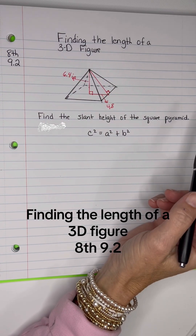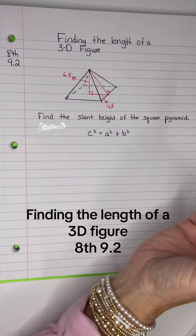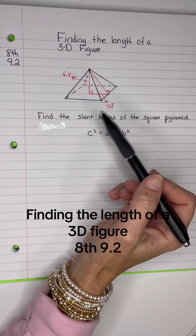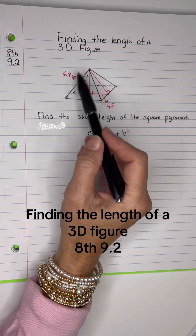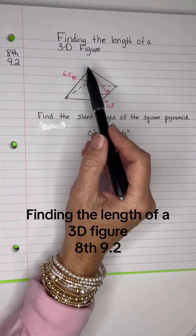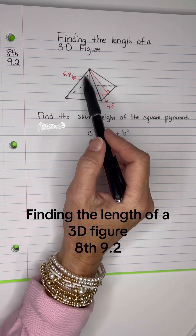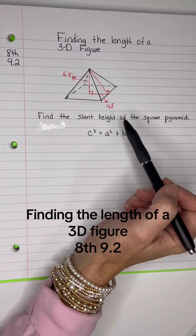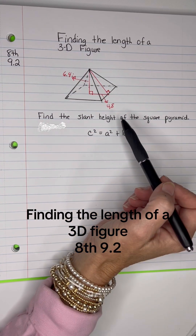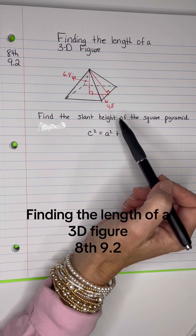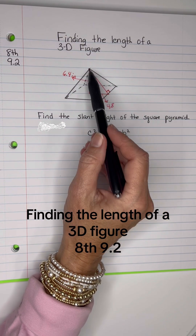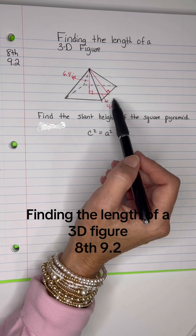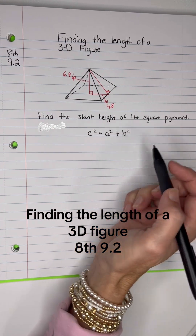Let's find the length of a 3D figure — we're looking for the slant height of a square pyramid. Here's a square pyramid, and inside that square pyramid you see a right triangle. I can use the Pythagorean theorem to figure out the hypotenuse; the slant height would be the hypotenuse of this right triangle.